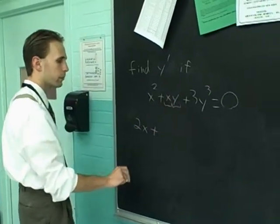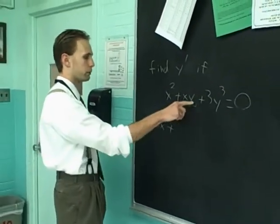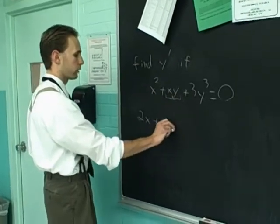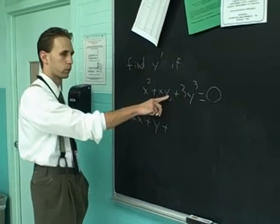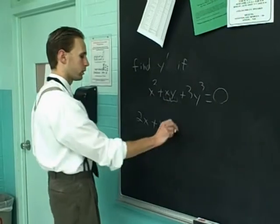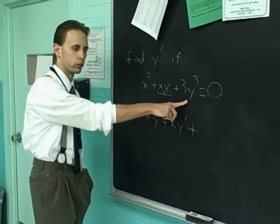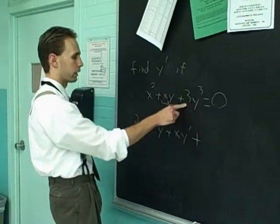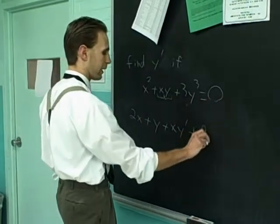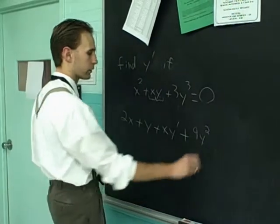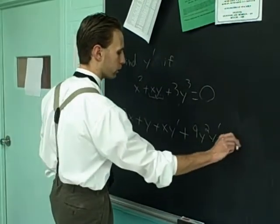And that will be 2x plus the product. All right, call one f, call the other g. It'll be f prime g. So that's y plus g prime, which is y prime, f, x, y prime, plus this thing, chain rule again. And implicitly bring down the 3, 9y squared takes care of the outside, times y prime, all equaling 0.